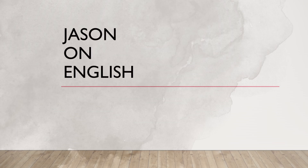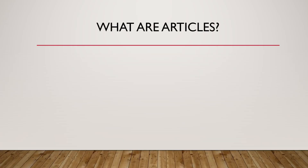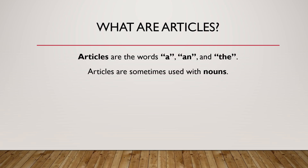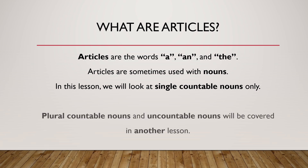Welcome to Jason on English. Let's look at using articles with single countable nouns. Articles are the words a, an, and the. Articles are sometimes used with nouns, and sometimes we don't use articles with nouns. In this lesson, we will look at single countable nouns only. Plural countable nouns and uncountable nouns will be covered in another lesson.